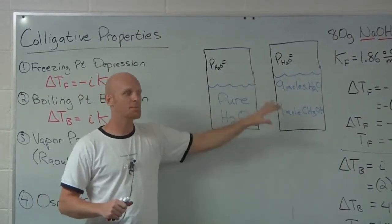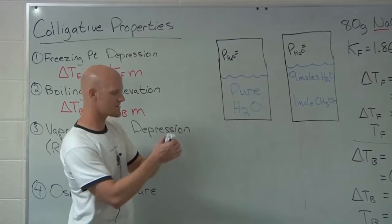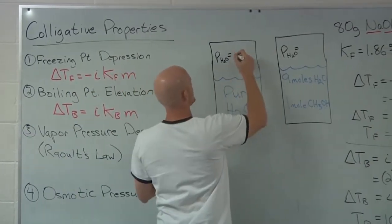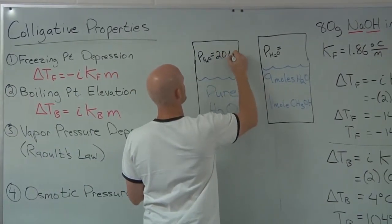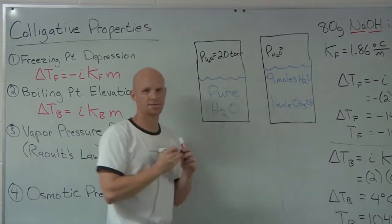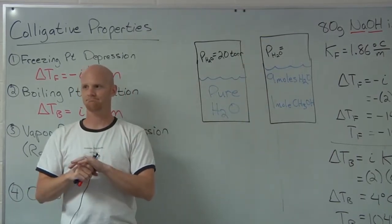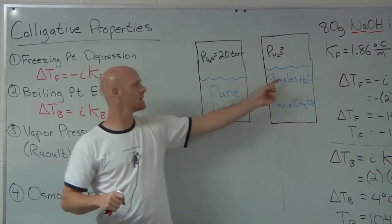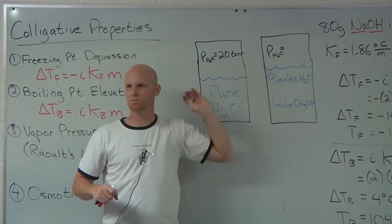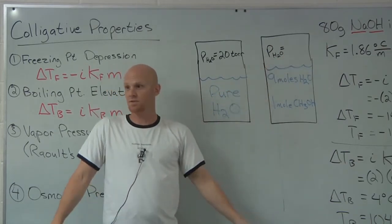So at a certain temperature we can look up what pure water is. In this case let's say we looked up pure water and it happened to come out to exactly 20 torr. And so here, what can you tell me about the vapor pressure at this point? It's going to be lower than 20. Awesome.